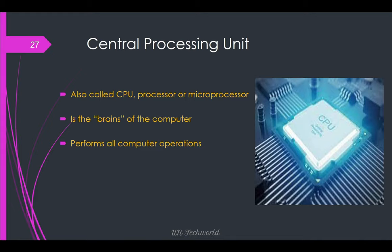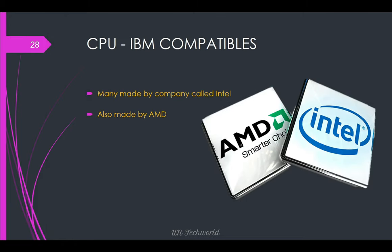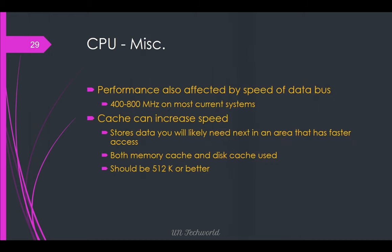Central processing unit, also called CPU, processor, or microprocessor, is the brain of the computer and performs all computer operations. For IBM-compatible computers, CPUs are mainly made by Intel and also by AMD. Performance is affected by the speed of the data bus, typically 400 to 800 MHz on most current systems. Cache can increase speed by storing data you are likely to need next in an area with faster access.